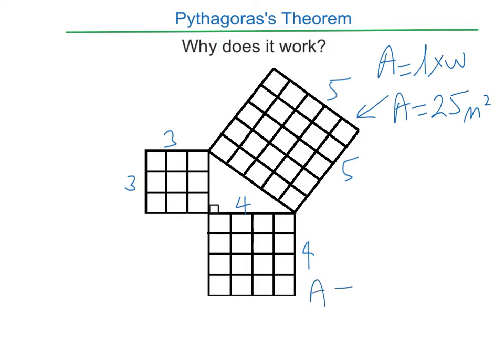The area for this one at the bottom here is 16 meters squared. The area for this square over here is nine meters squared, three times three.